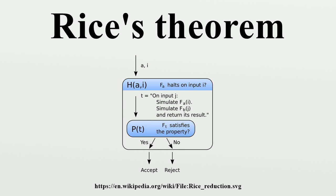This method doesn't depend specifically on being able to recognize functions that compute squares, as long as some program can do what we're trying to recognize. We could have had a method for recognizing programs for computing square roots, or programs for computing the monthly payroll, or programs that halt when given a particular input, or programs that commit array bounds errors. In each case, we would be able to solve the halting problem similarly.